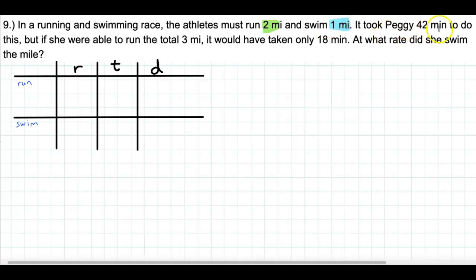It took Peggy 42 minutes to do this. So she ran two miles and swam a mile. It took 42 minutes. But if she was able to run the total three miles, it would only take 18 minutes.